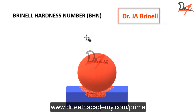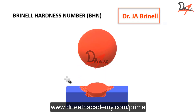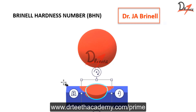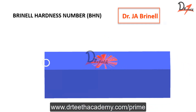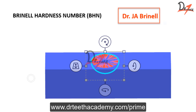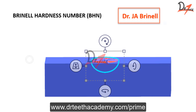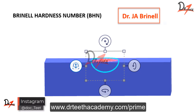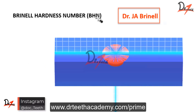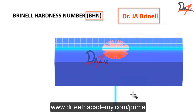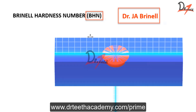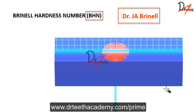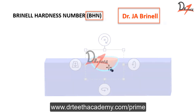Once we give this load, we will have an indentation on the surface of the material. Since it is a ball or sphere, we will get a round dent in the material. After we have the dent, to measure the hardness number, we divide the load by the area of indentation — and that value is the Brinell hardness number. So for a given load of, say, 3000 kg, if the indentation is smaller for one material, that material is harder.